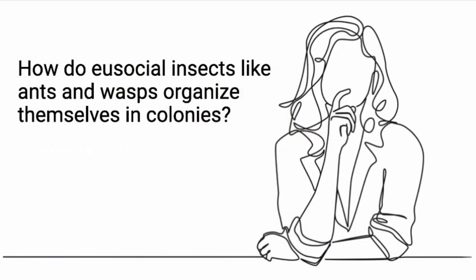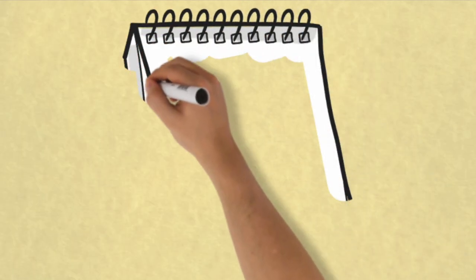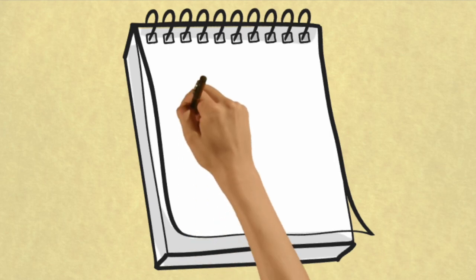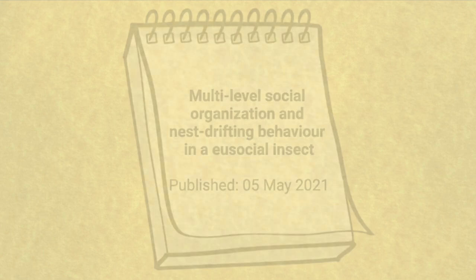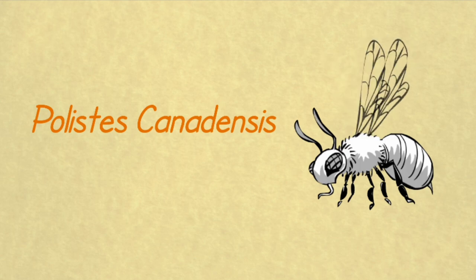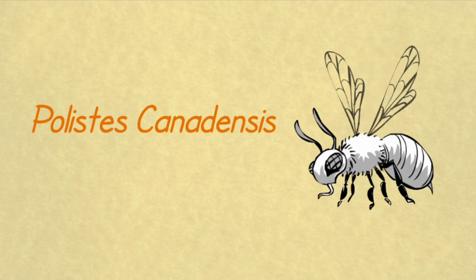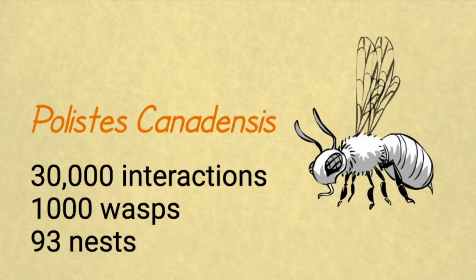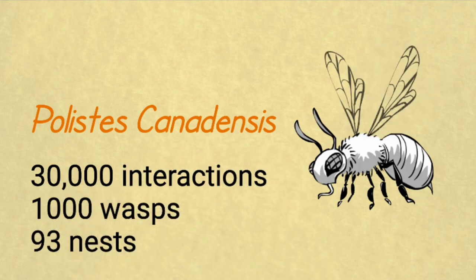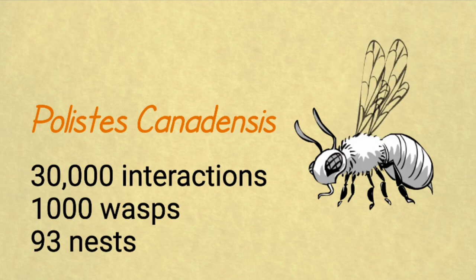Have you ever wondered how eusocial insects like ants and wasps organize themselves in colonies? Sirian Sumners, a professor of behavioral ecology at UCL, was a co-author on a recent paper that tells us more. To describe and explain interactions across levels of social organization, she and her team observed the eusocial paper wasp, Polistes canadensis. They looked at over 30,000 interactions between 1,000 wasps from 93 nests across Panama.